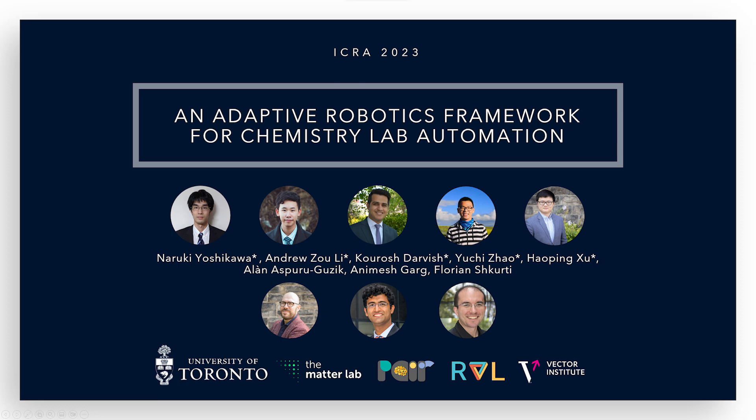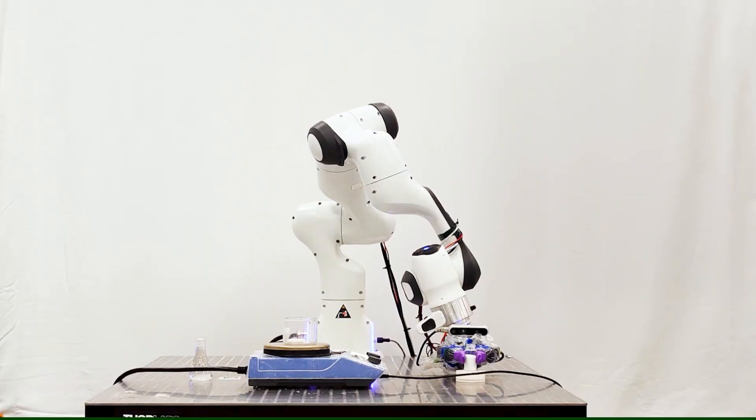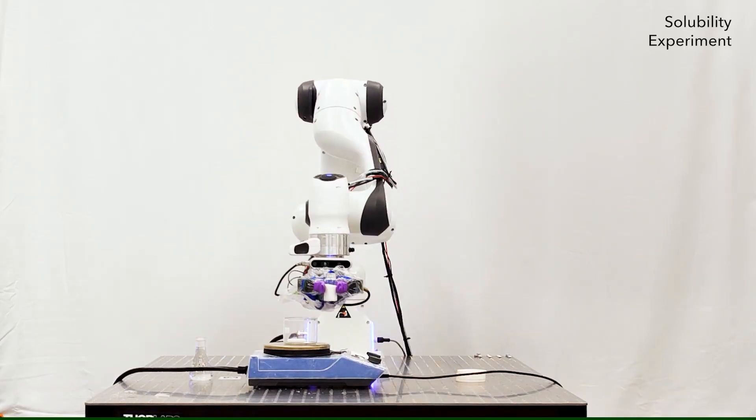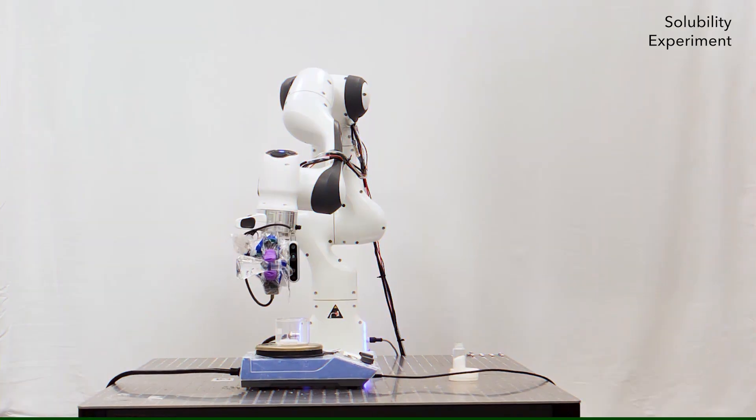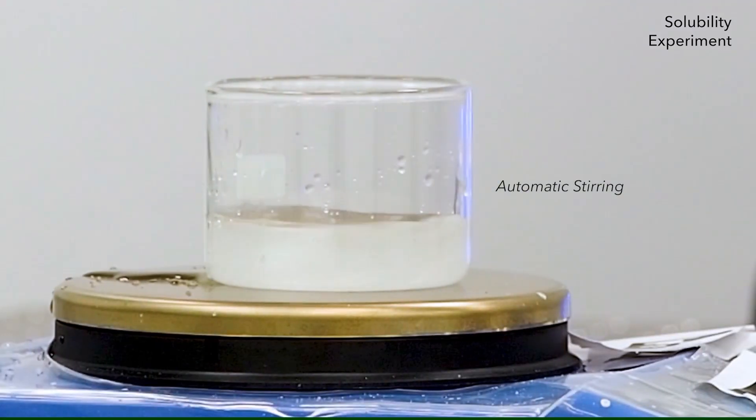We propose an adaptive robotics framework for chemistry lab automation. The proposed framework facilitates material discovery by using robots to help chemists through automating laborious experiments that are often dangerous. We verify the utility of our framework with several chemistry experiments, including solubility and recrystallization.